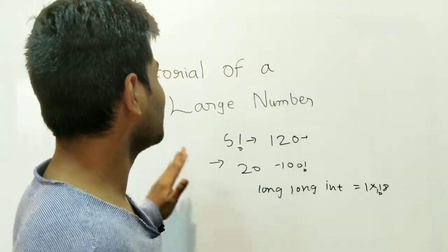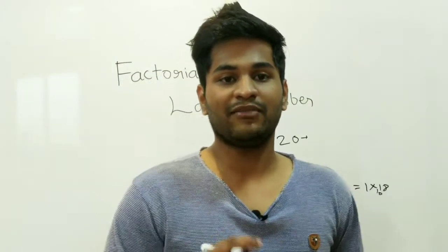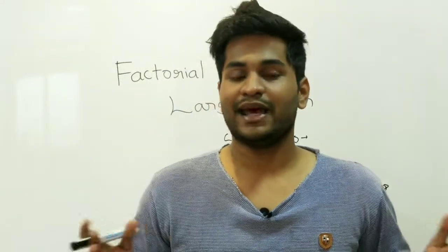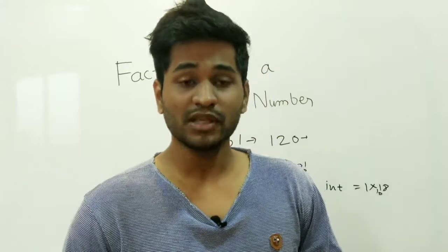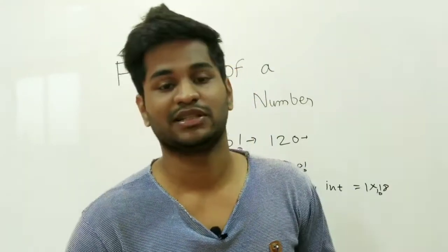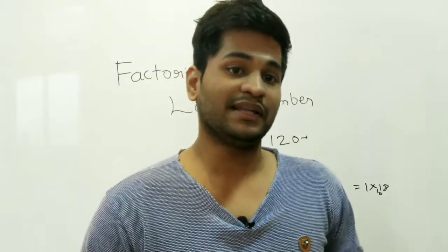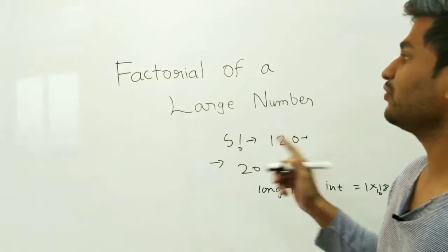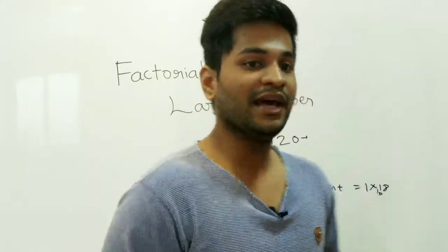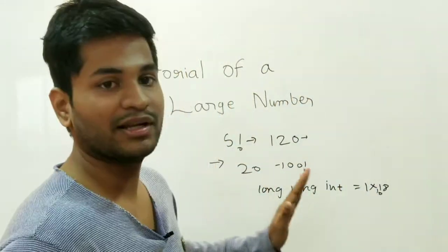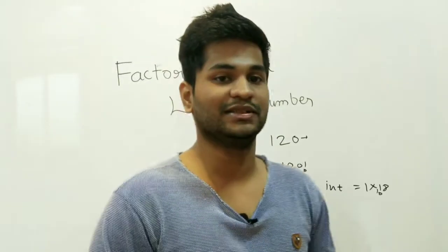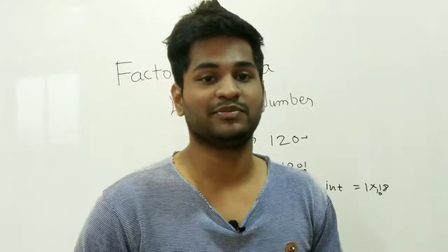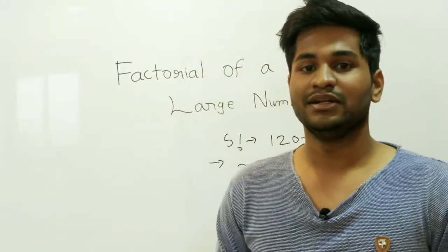What we are going to do is store every single digit in the form of an array. An array can have a size up to 10^6, so up to 10^6 digits can be stored. To find the factorial of a large number we will use an array where every element stores one digit of the answer. Now I'm going to write the C++ code for this.